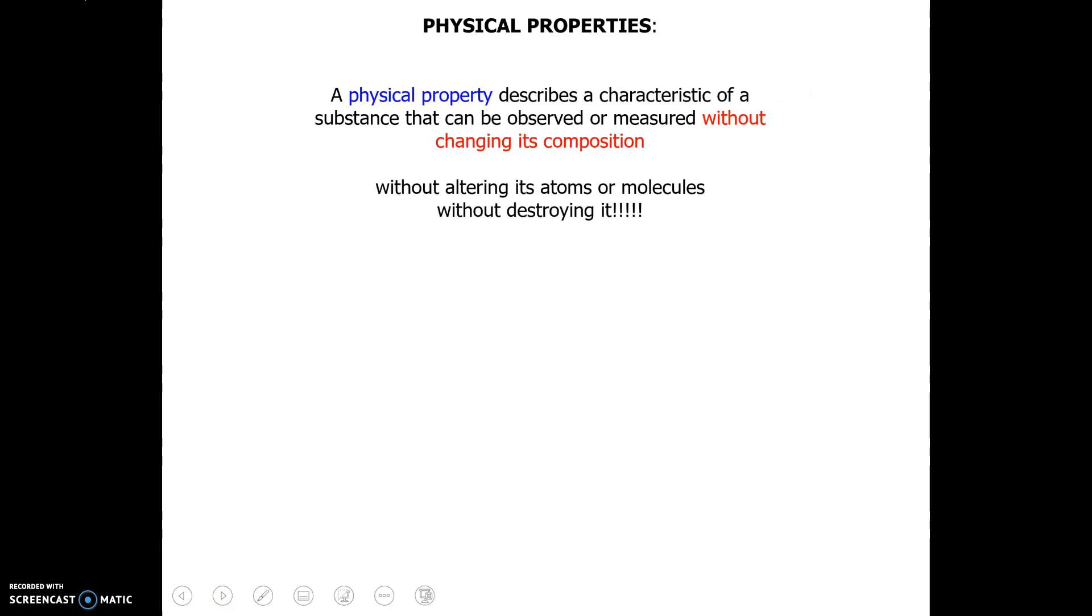All right, so once again let's quickly go over our physical properties. A physical property describes a characteristic of a substance that can be observed or measured without changing its composition. So without altering its atoms or molecules, we are not destroying anything.